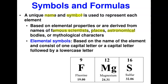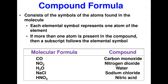Each element is represented by a symbol. Some elements have only a single letter as their symbol — that letter must be a capital or uppercase letter. Some elements are represented by two letters — the first letter is uppercase and the second letter is a small letter. For example, fluorine and sulfur are single-letter symbols and must be written in uppercase. That is a rule.